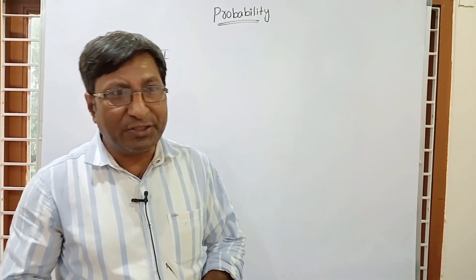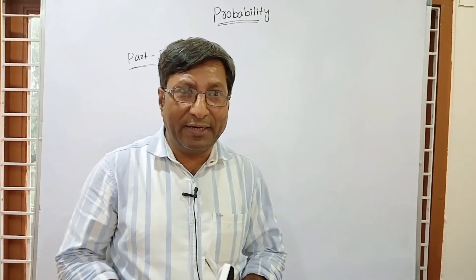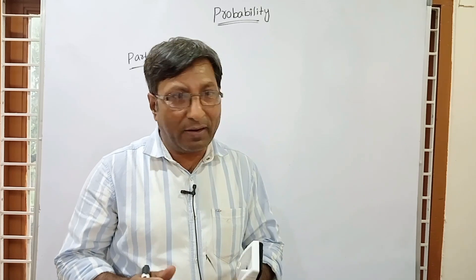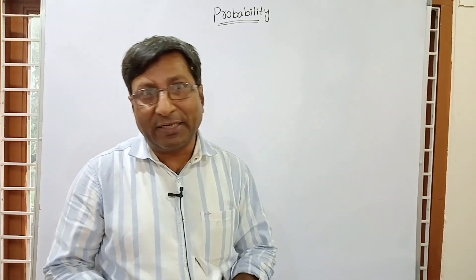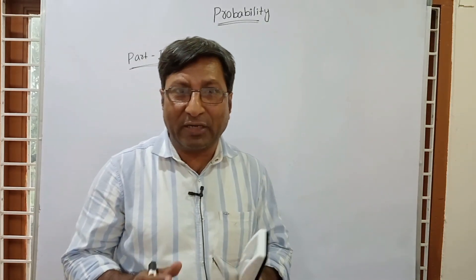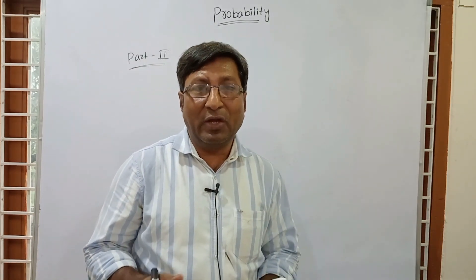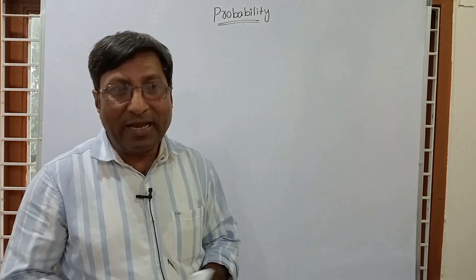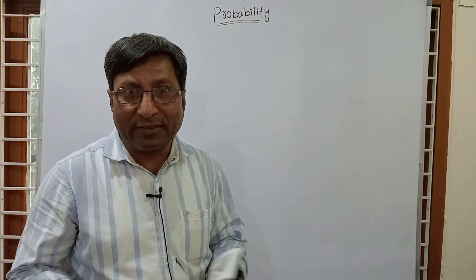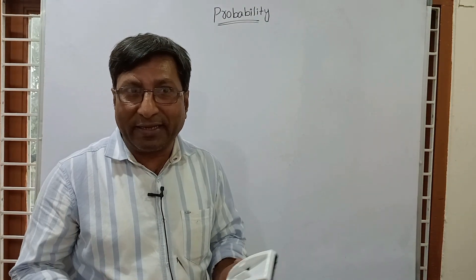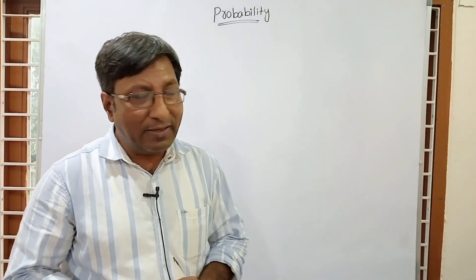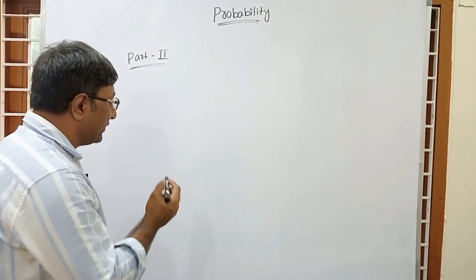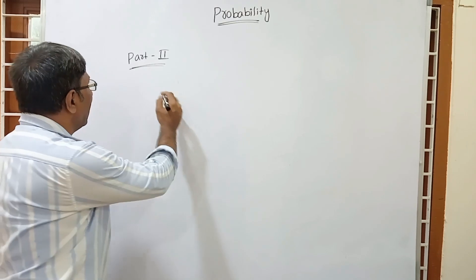Welcome. Today I am going to start probability part 2. Earlier we have done probability part 1, in which we covered the basic formula of probability, the 1-point case, 2-point case, and about dice. Now in part 2 we will start the 2-dice case.